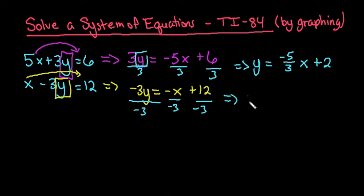So our second equation is y equals 1 third, and it's positive 1 third since I have a negative divided by a negative. And then because I have a positive 12 divided by a negative 3, we would end up with 1 third x minus 4. So these are our two equations that we're going to plug into our calculator.